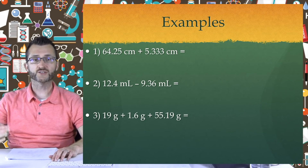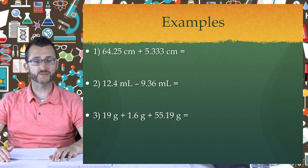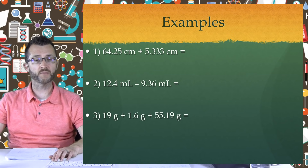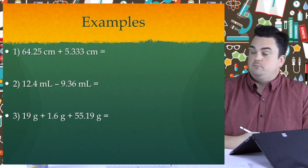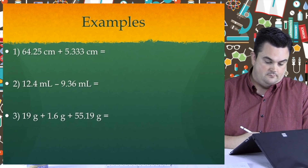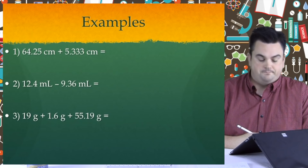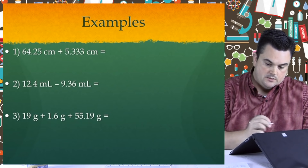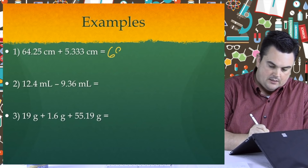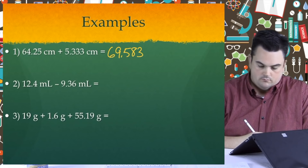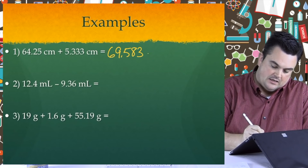In each of these three examples, we have numbers that we are adding or subtracting. We're going to write down an unrounded answer first with units, then apply the new sig fig rules. For example one, we have 64.25 centimeters plus 5.333 centimeters. The unrounded answer is 69.583 centimeters.